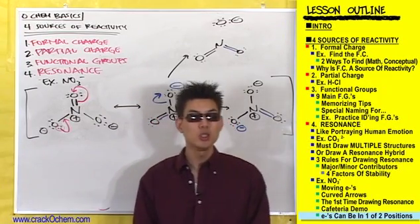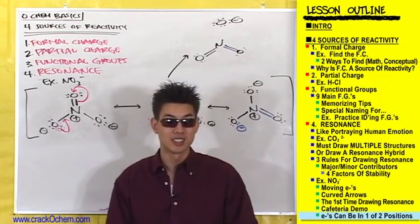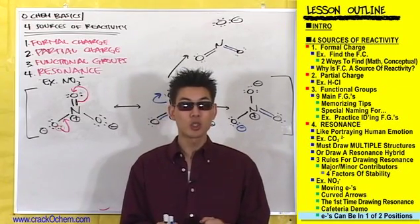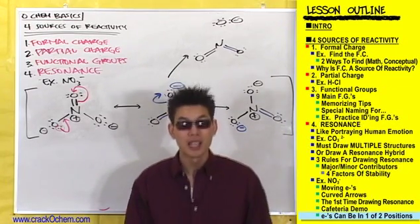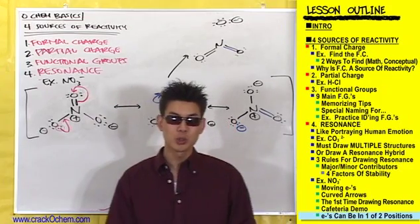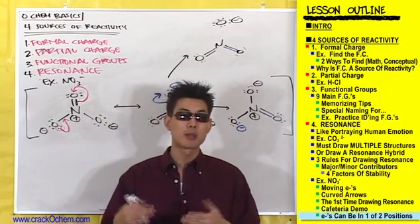Also, realize that there's only two ways electrons can exist, standing up as lone pairs or sitting down as bonds. And hopefully thinking about electrons this way will make it not seem so abstract.